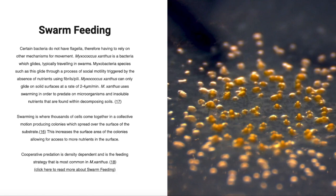As myxobacteria do not have flagella, they have to glide using fibrils, or pili, through a process of social motility.